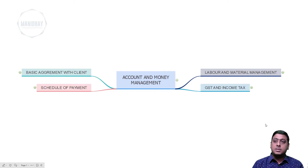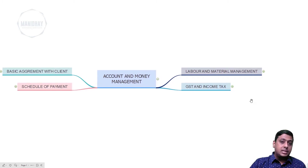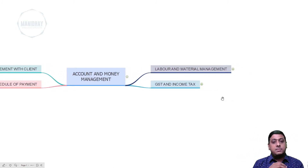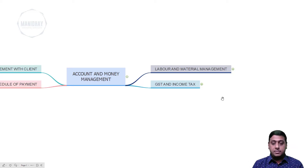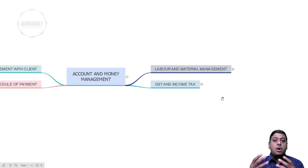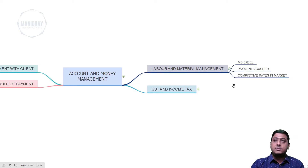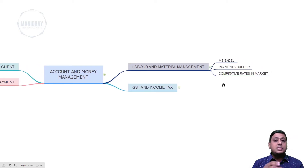In this particular session we will discuss first about labor and material management. It is very important for a civil engineer to maintain accounts and money management with respect to labor and material, because the prime factors to complete the project are the labor team and the material supplier team. If you have skilled laborers and quality material, the final product will be awesome.